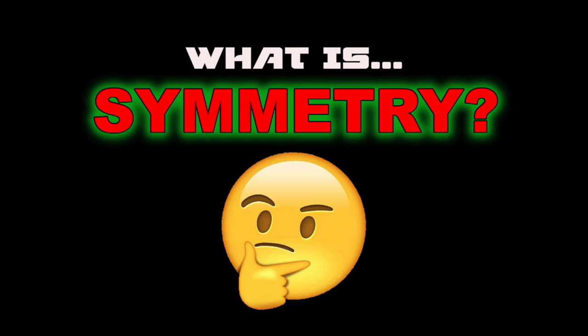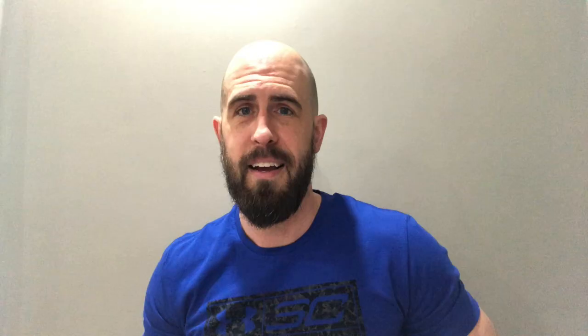Before we begin drawing, I feel it's important that we define what the term symmetry means. By definition, it's the quality of being made up of exactly similar parts facing each other or around an axis. To help demonstrate this, I drew a very simple heart shape on my sheet of copy paper and folded the paper in half. That fold is going to represent the axis line.